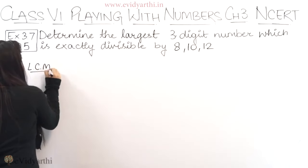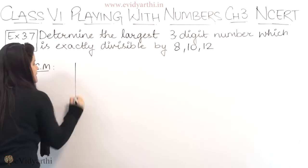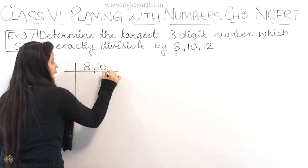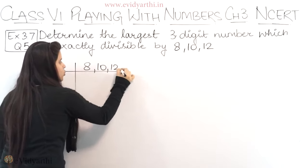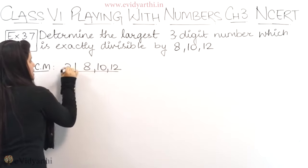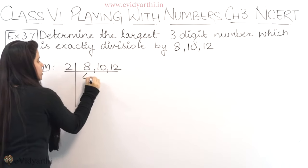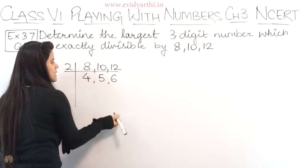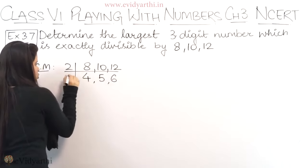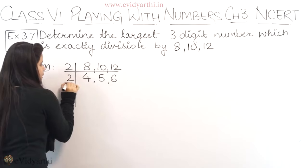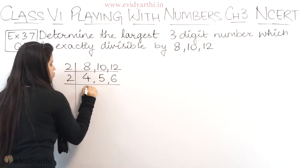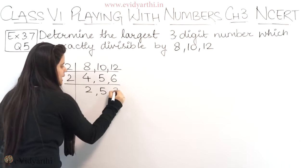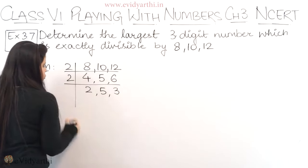Let's go ahead and find the LCM of 8, 10 and 12. So, 2 times 4 is 8, 2 times 5 is 10, and 2 times 6 is 12. Again, dividing by 2: we get 5 as it is, and 6 divided by 2 gives us 3.